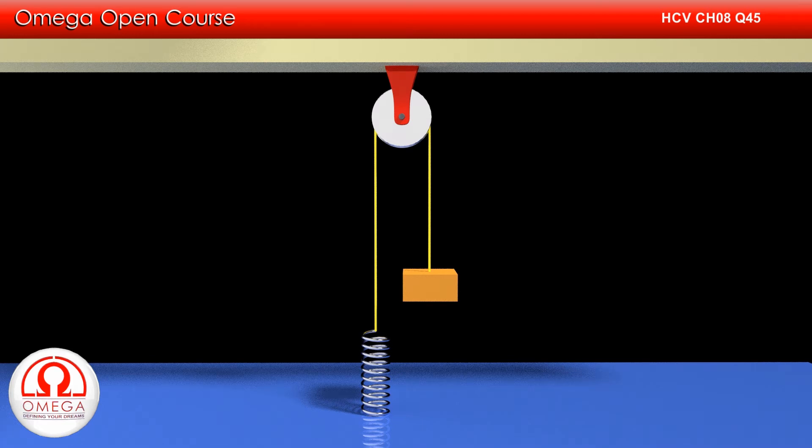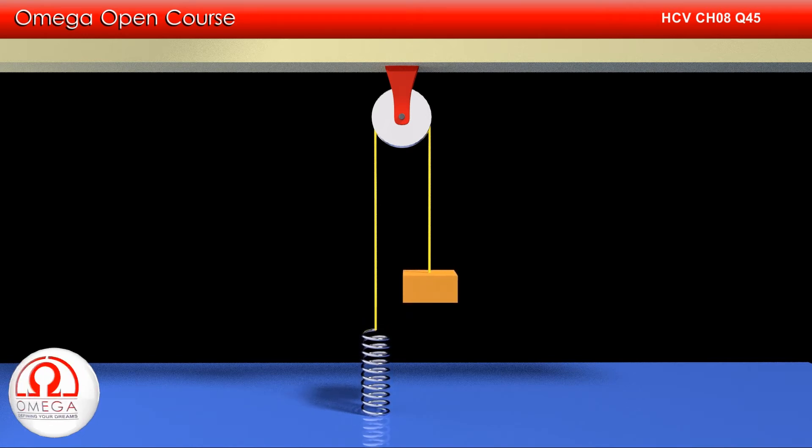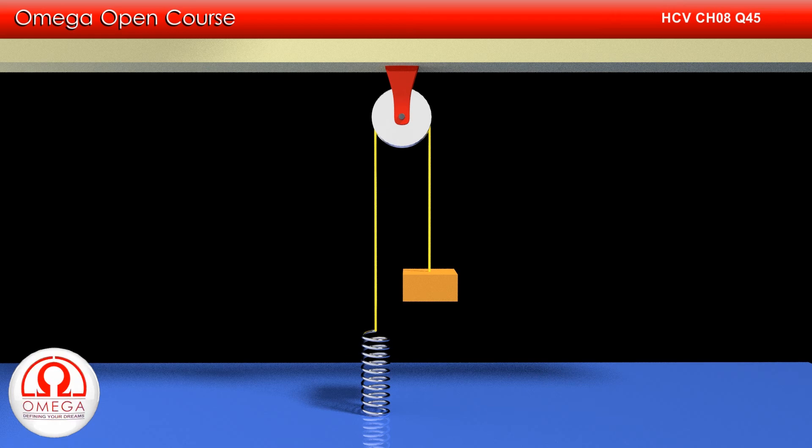You may also look at this in the following manner. When the block is at its lowest position, it is at rest. If it were at equilibrium, net force on it must have been zero and it would not move from this position. But we know that it does move up and hence a net force is acting on it in upward direction.